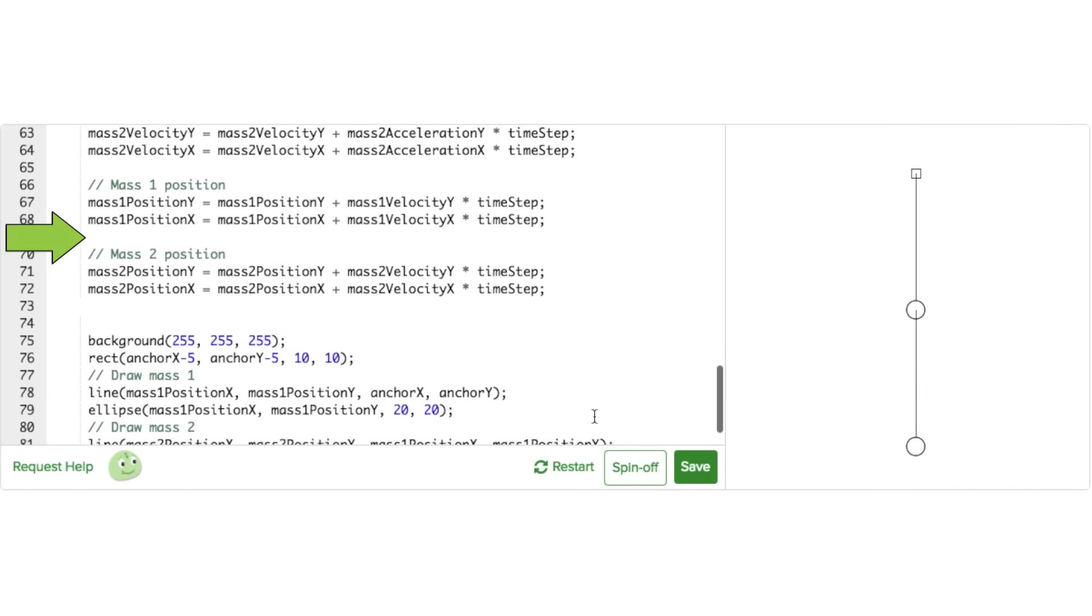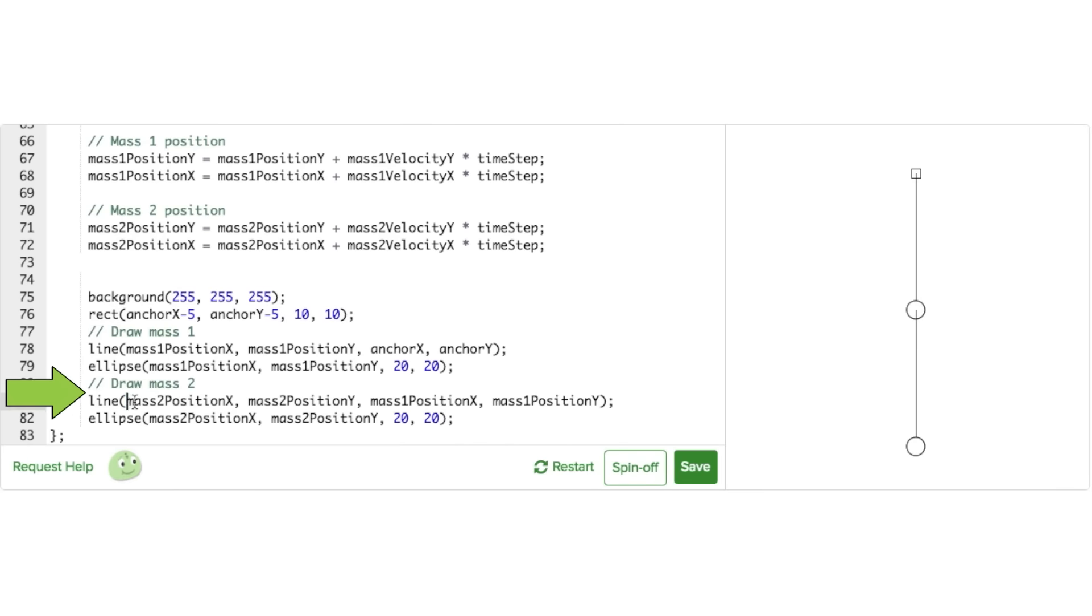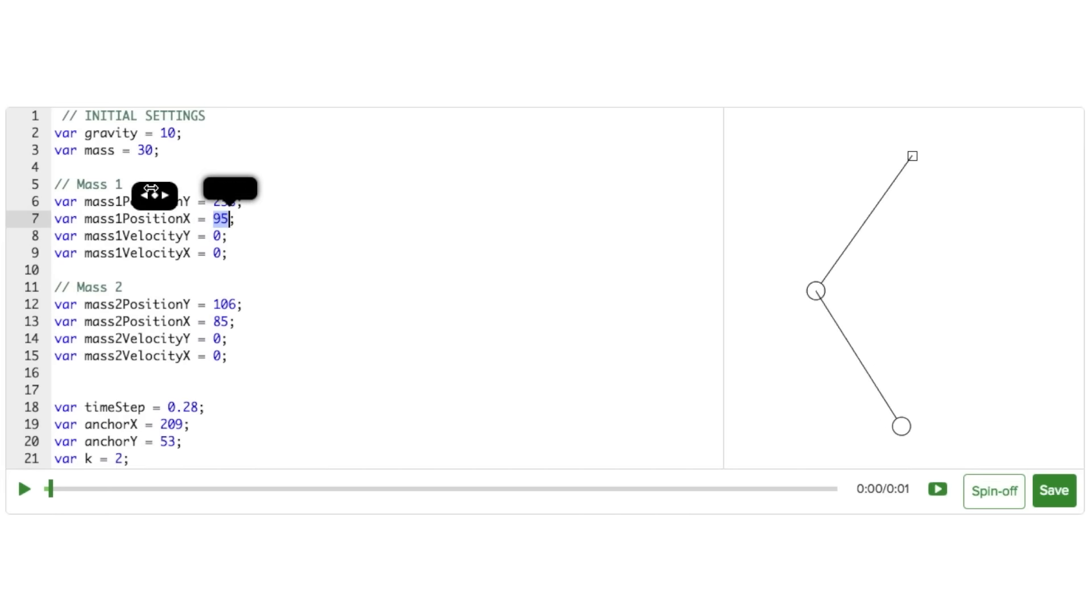Finally, we just need to draw the new circle and line for this mass and spring. The new line will extend from mass 1 to mass 2. The new circle will be the center of mass 2's position. And that gives us this.